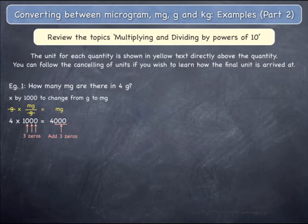The units of grams cancel, leaving only milligrams, which becomes a final unit. 4 grams equals 4,000 milligrams.